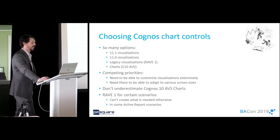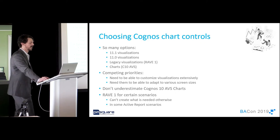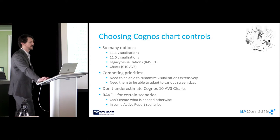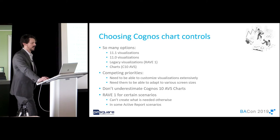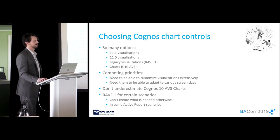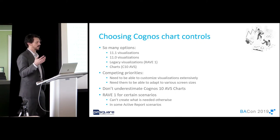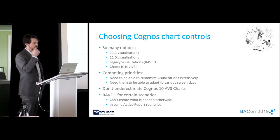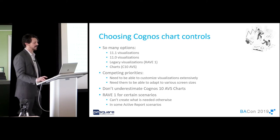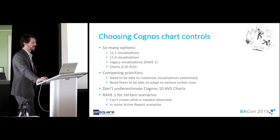One more thing about RAVE charts: there's technically a RAVE 2 as well, where you couldn't customize it at all — it equates to the Cognos 11 charts. RAVE 1 are the ones you can customize. In some active reports scenarios these are very useful because they're basically client-side rendered within the RAVE report, so you can add some animation and decrease the file size of your active reports — in addition to just needing to create something totally custom.